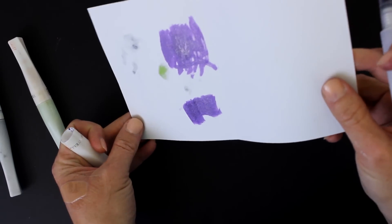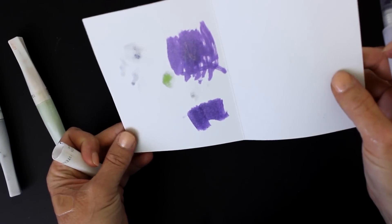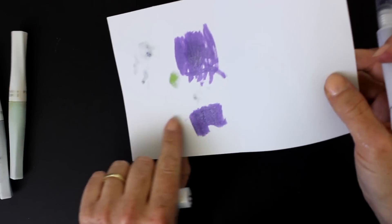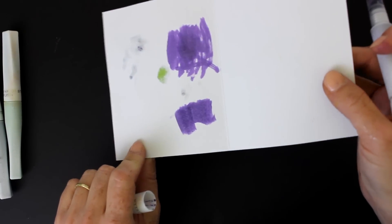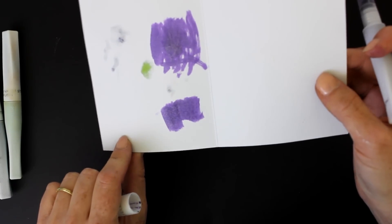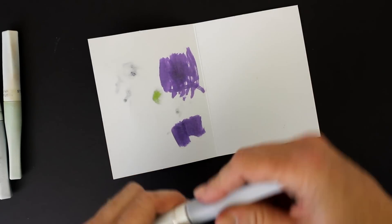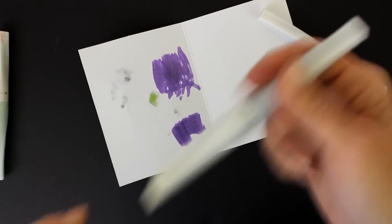As it absorbs into the paper, can you see that shine? That's not because it's wet, that's because it leaves behind a sparkly, glimmery residue. You can see it on the purple.